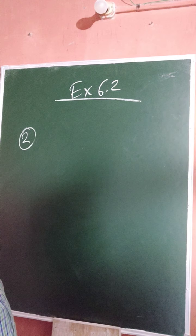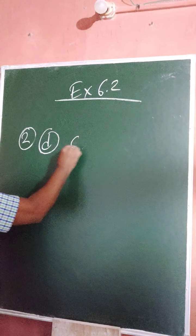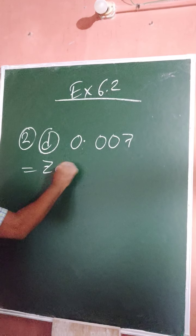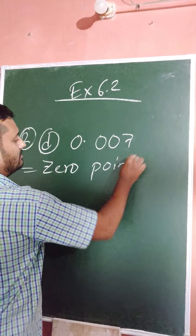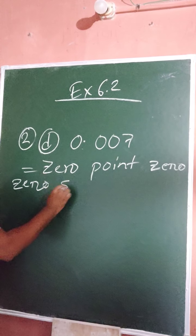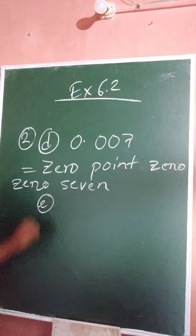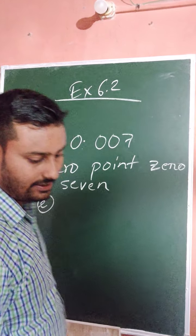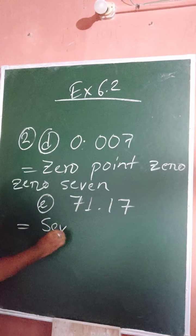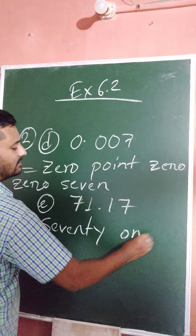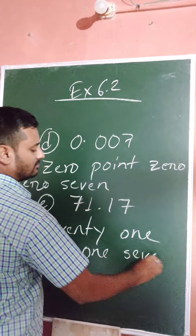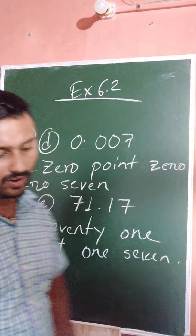Part (d) is 0.007: zero point zero zero seven. And the last one, part (e), is 71.17: seventy-one point one seven. These are the answers for questions one and two.